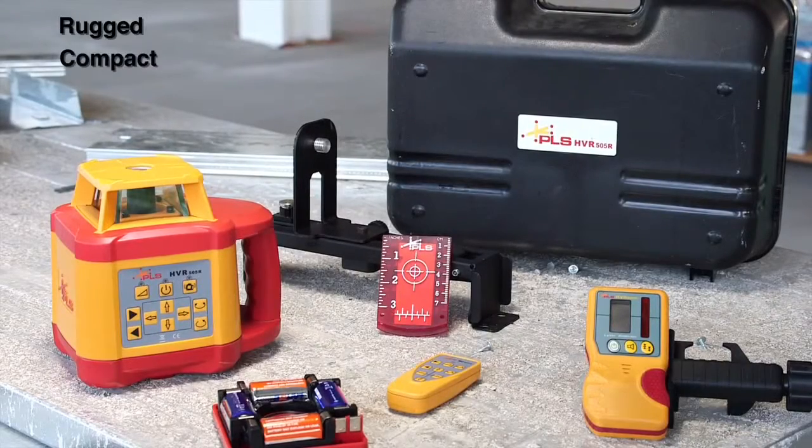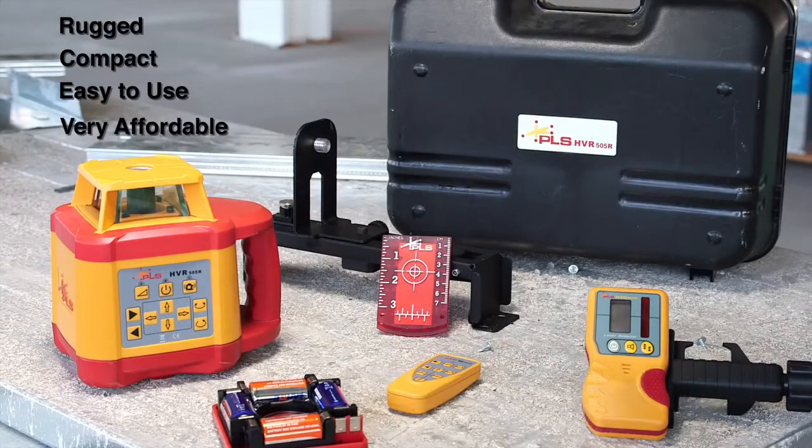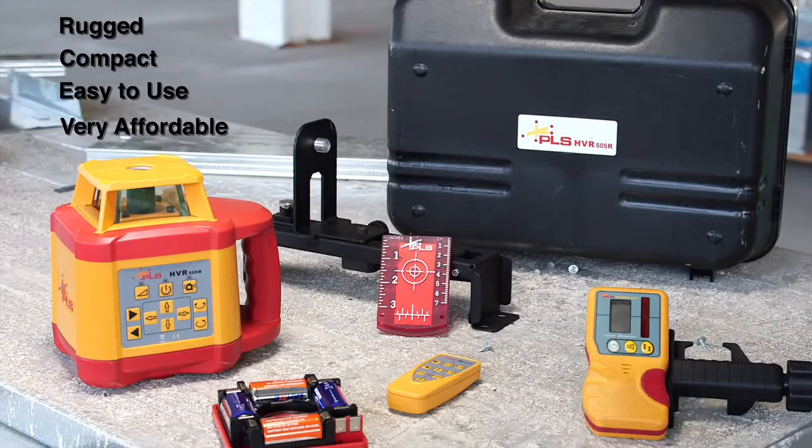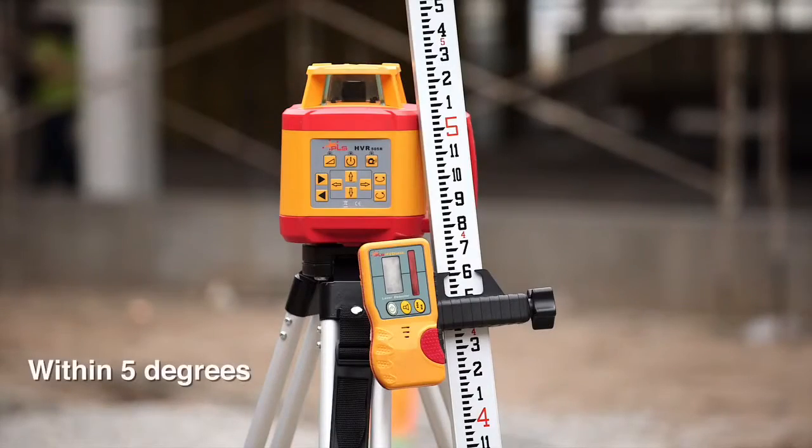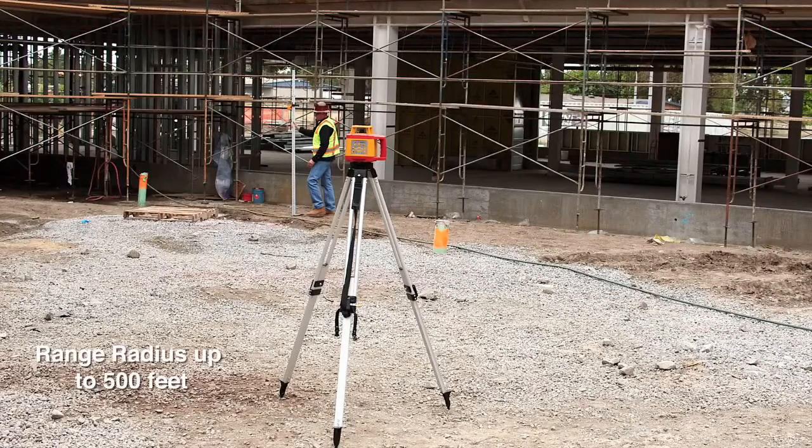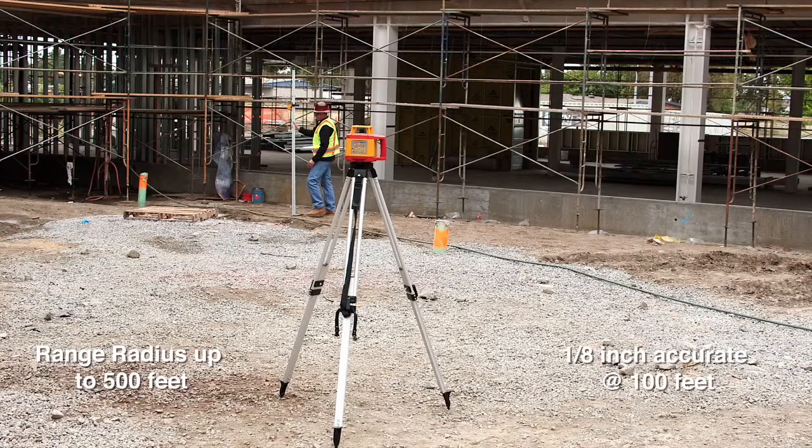compact, easy to use, and very affordable, the fully automatic HVR 505 is self-leveling to within 5 degrees. It has a radius range of up to 500 feet and is accurate to one-eighth inch at 100 feet.